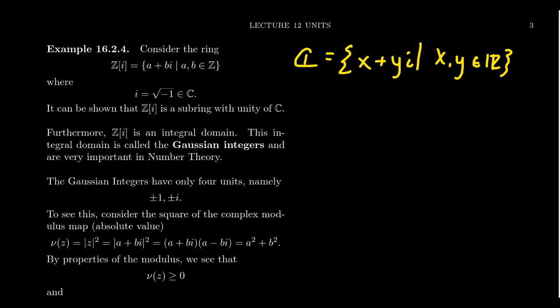The Gaussian integers are the analog here, but now our combinations is the real part is an integer and the imaginary part is also an integer.